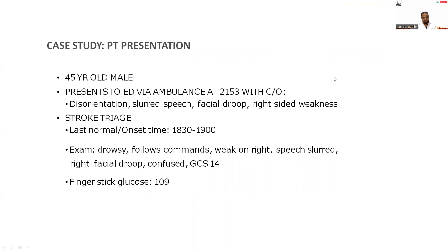A 45-year-old patient presented to the ED via ambulance at 9:53 PM with complaints of disorientation, slurred speech, facial drop, and right-sided weakness. The stroke pathway was activated. The last time the patient was normal was at 6:30 PM and the onset of symptoms was 7:00 PM. On examination, the patient was drowsy, following commands, with right-sided weakness, slurring of speech, right facial drop, and confusion. GCS was 14 and blood glucose level was 109.